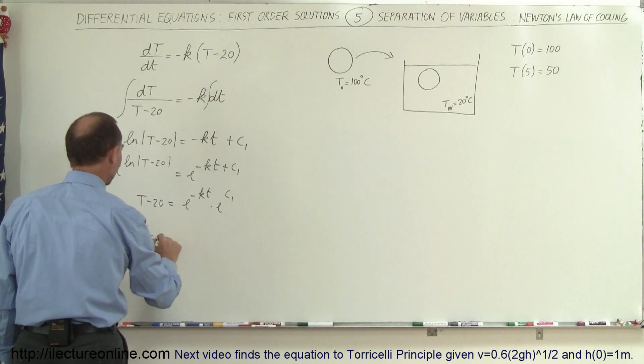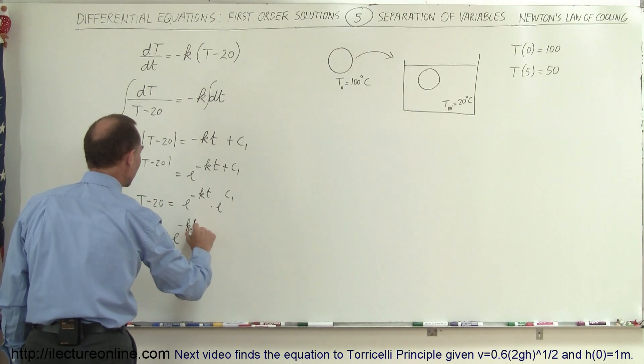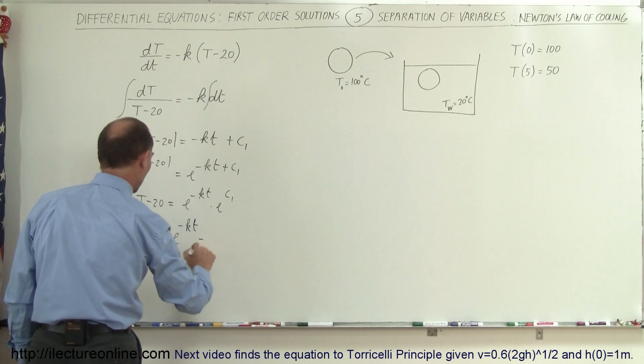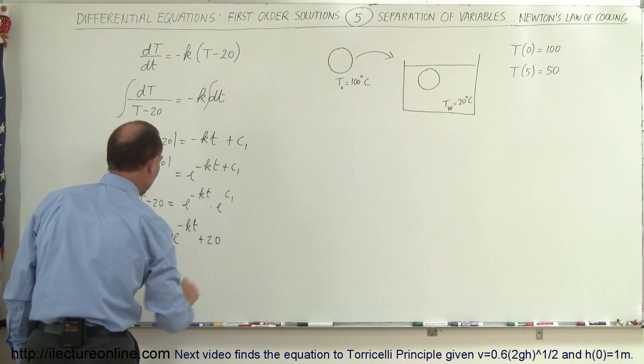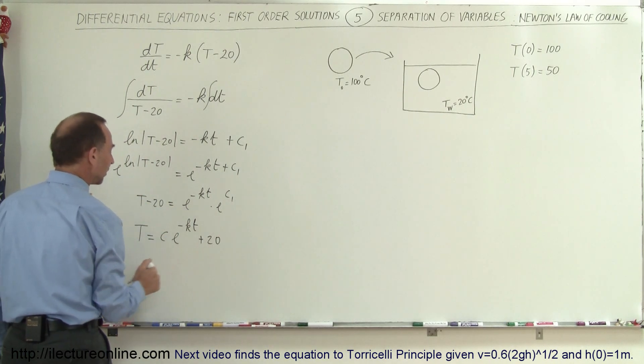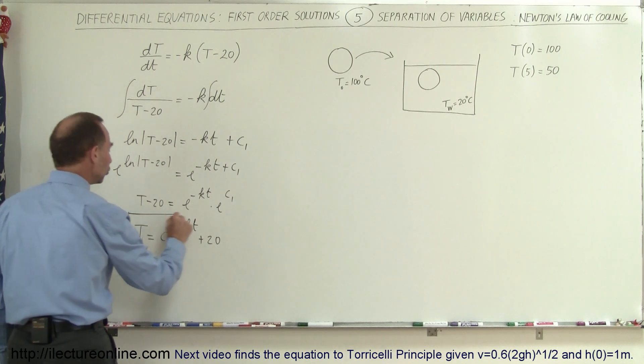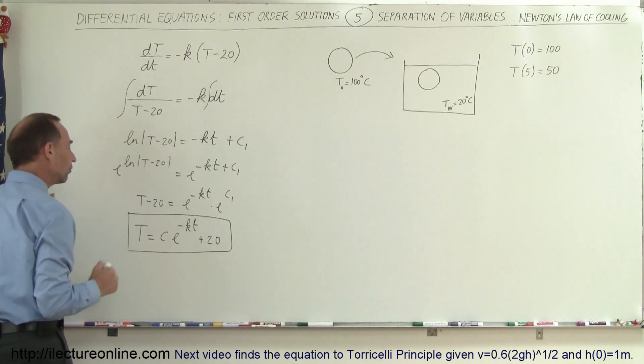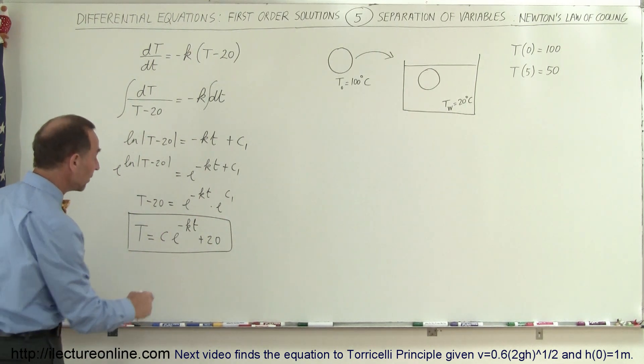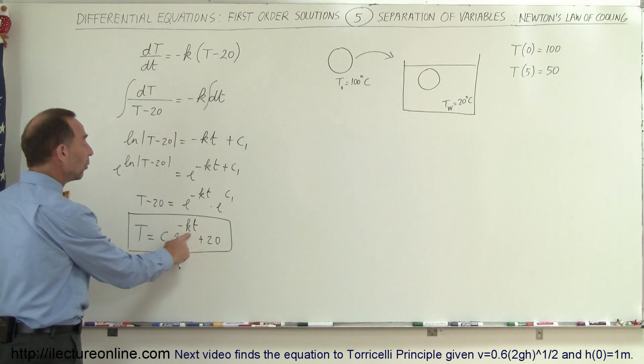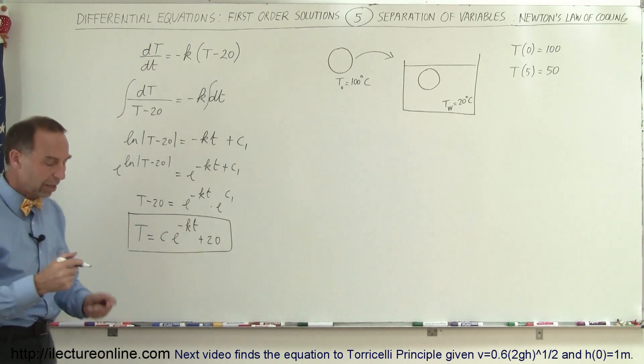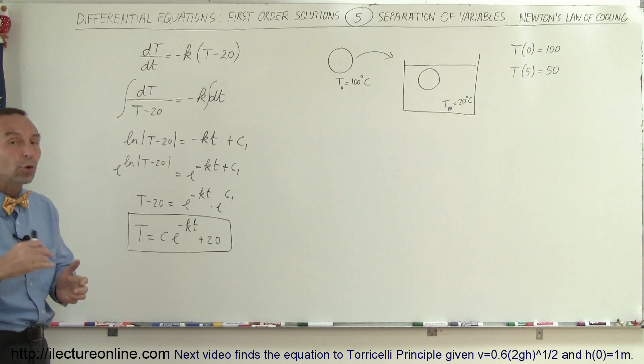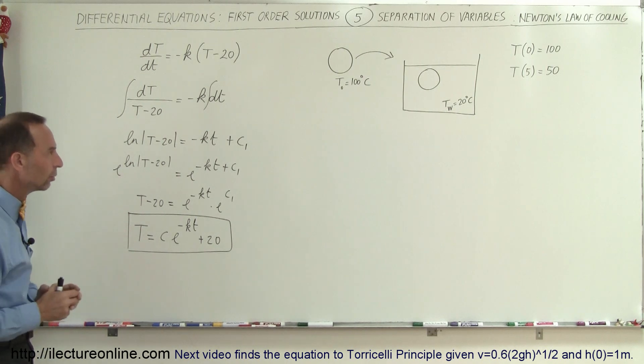The minus 20 can go to the other side, so T equals C times E to the minus Kt plus 20. This is the solution to my differential equation. There are still two unknowns: C is the constant, and K is the constant associated with the rate of cooling of this metal that we placed in the water.